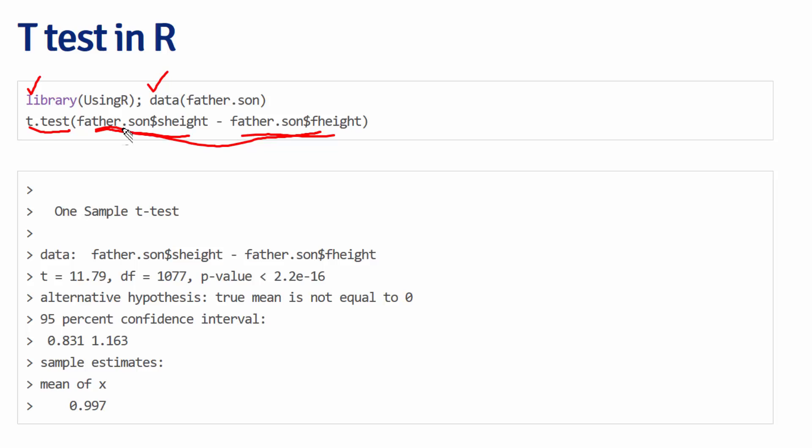You do that with t.test, and you can either pass the difference directly to the function, or you could pass it the two vectors and then add the argument paired equals true. It gives you your t statistic right here, 11.79, and your degrees of freedom right here, 1077. So we had exactly 1078 pairs that we took the difference of.